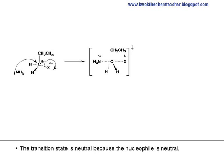The transition state is neutral because the nucleophile is neutral. X has a partial negative charge because it is taking bonded electrons. N has a partial positive charge because it is donating its electrons to carbon.